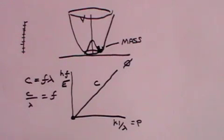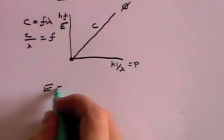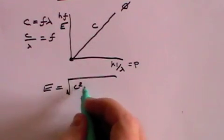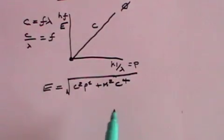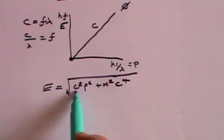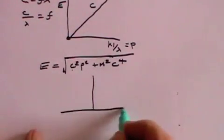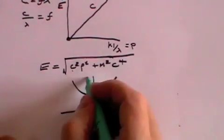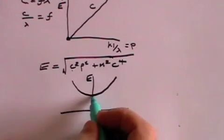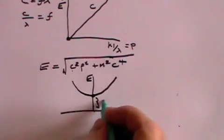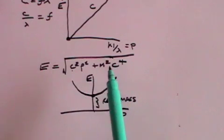But for a massive particle we showed in the videos on special relativity that the energy is the square root of c squared p squared plus m squared c to the fourth, where m is the mass of the particle, p is the momentum, c is the speed of light, and e is the energy. Now that will give rise to a graph that looks like this. Here we are plotting energy against momentum. And even when the momentum is zero, there is still some energy. And that energy is the rest mass energy.